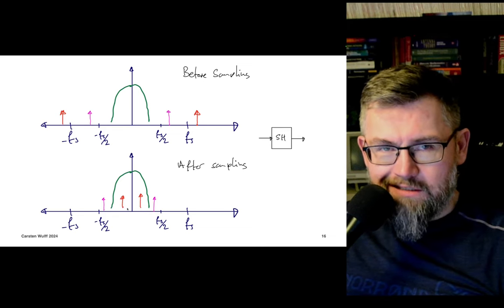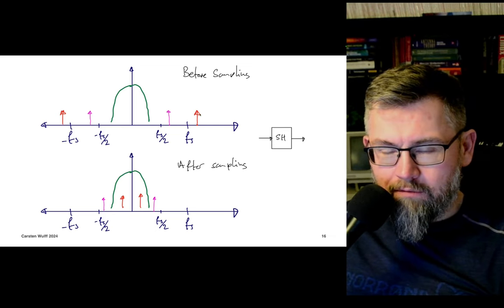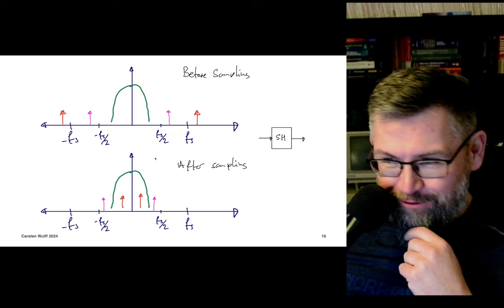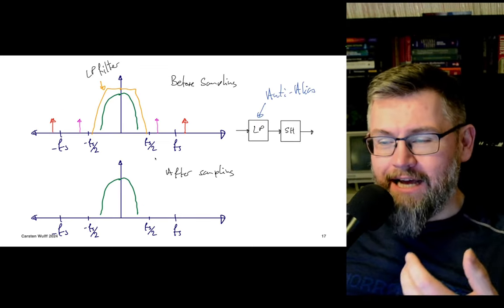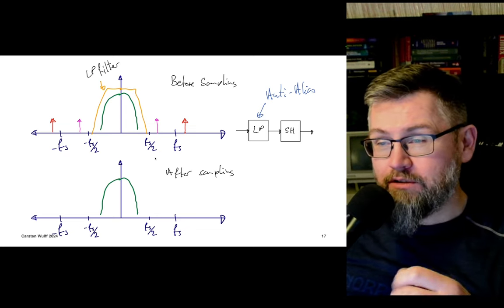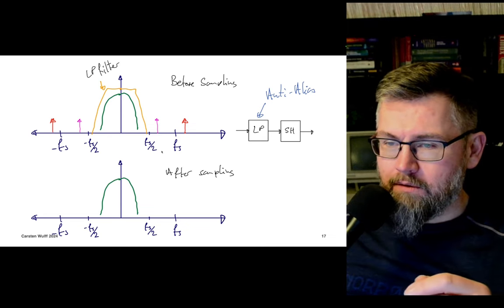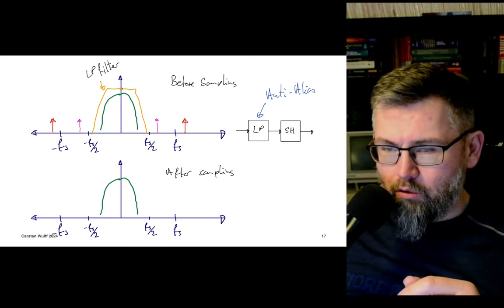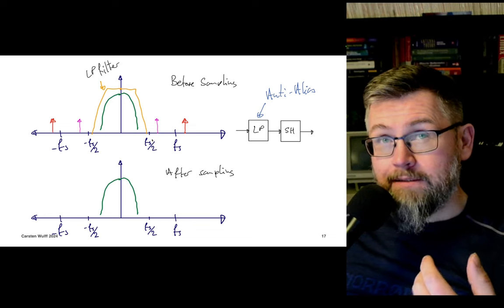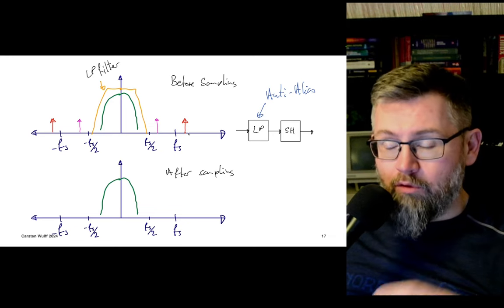We have to filter these unwanted signals before we sample — that's where anti-alias filters come in. In front of any switch capacitor circuit, you must have some sort of anti-alias behavior to remove the unwanted parts. One way is a simple analog low-pass filter that dampens any high-frequency components before sampling. After sampling, we only have our wanted signal.